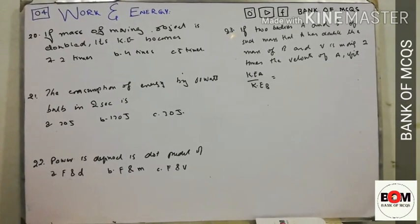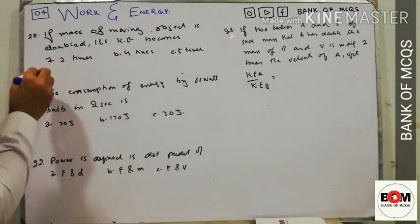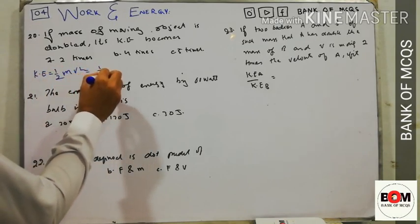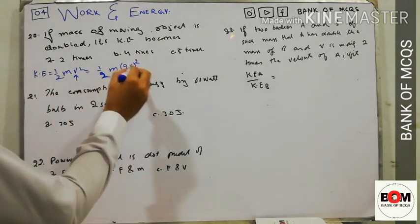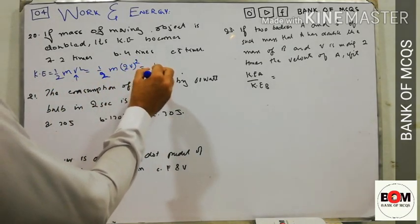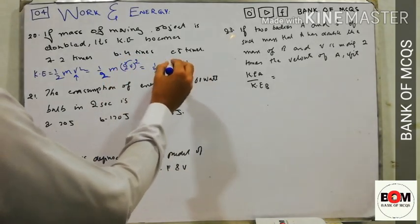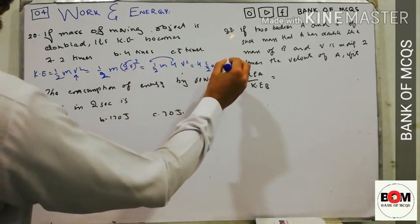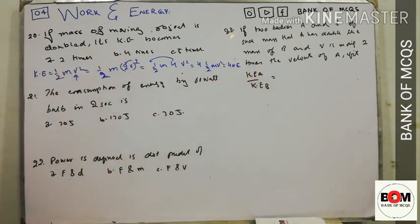MCQ 20: if the velocity of an object is doubled, what happens to kinetic energy? KE = ½mv². Replacing v with 2v: KE = ½m(2v)² = ½m·4v² = 4×(½mv²). So kinetic energy becomes 4 times the original. Option B is correct.